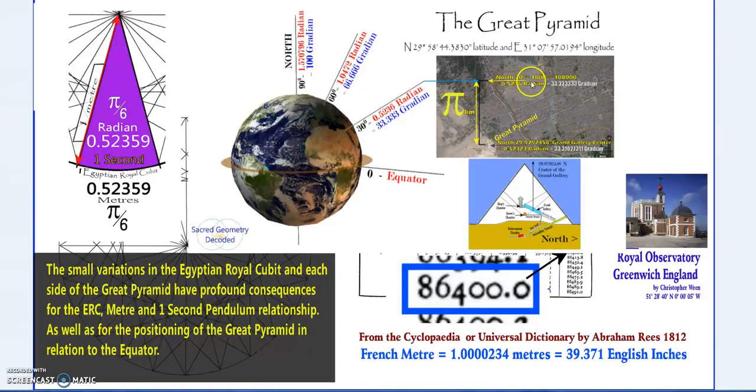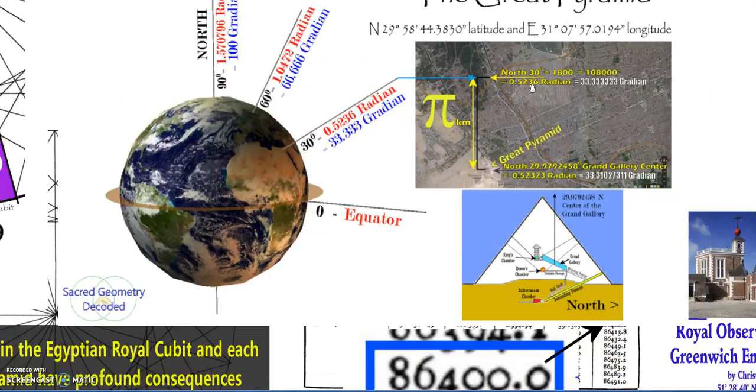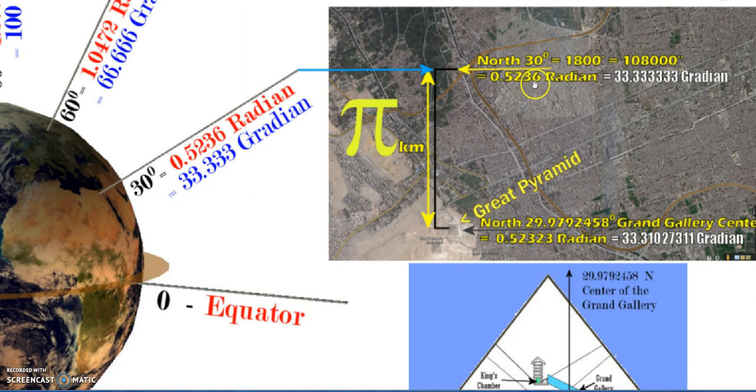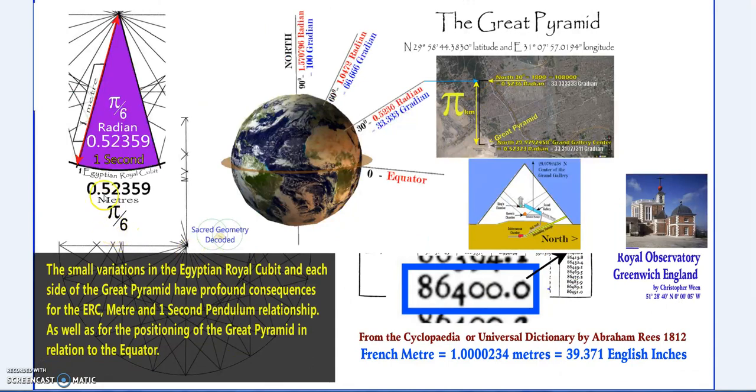It's often said that the pyramid is exactly at 30 degrees north. Along with degrees we also have gradient—30 degrees is 33.33 gradient. Another way of measuring an angle is radian. One circle is 360 degrees or 2 pi radians. 30 degrees is pi over 6.